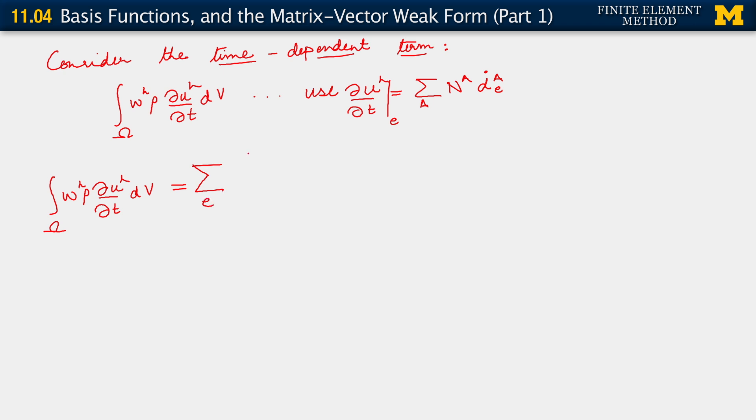Right, now let's write out the usual sort of summation that we have. Sum over a, N_a, c_a^e, right? And we know that this first parenthesis is what gives us the w_h term.